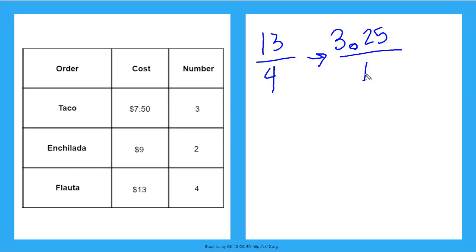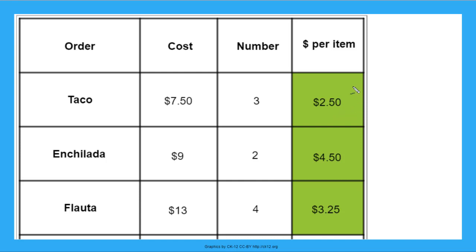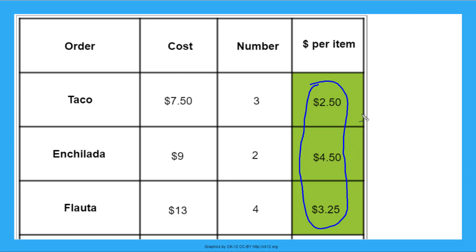Now let's fill in the chart to see the unit rates for each item. I've put my unit rates in — that's my cost per item. And if I'm going to order one taco, one enchilada, and one flauta, my total will be all of these added up. So $2.50 plus $4.50 plus $3.25 — my total comes to $10.25.